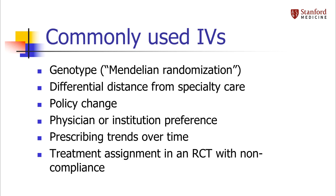Instrumental variable studies that involve genes are also called Mendelian randomization studies. Other commonly used instruments include differential distance from specialty care — for example, how far do you live from a stroke center — policy changes, physician or institution preference for one treatment over another, prescribing trends over time, and finally, treatment assignment in a randomized trial with noncompliance can also be treated as an instrumental variable.